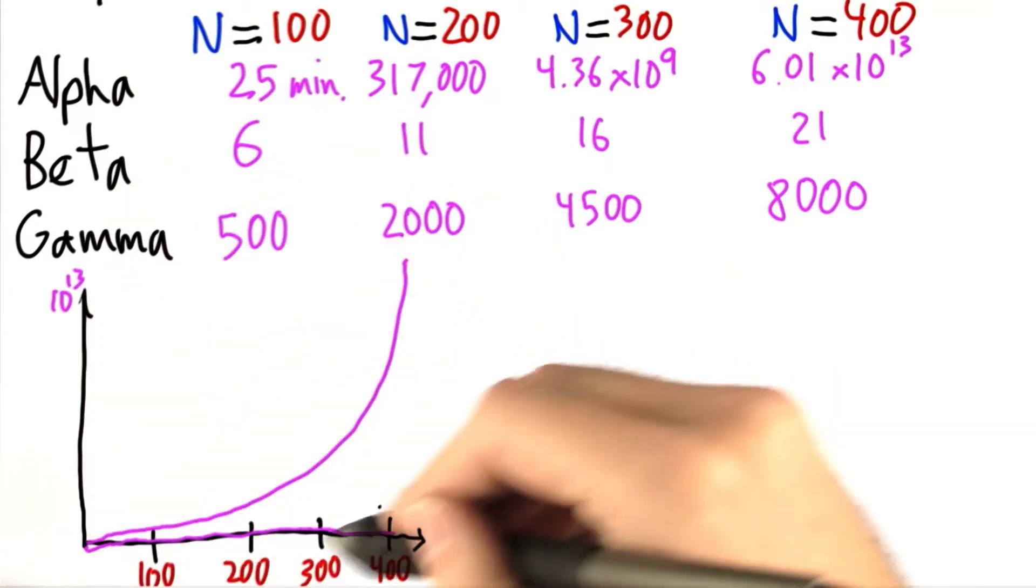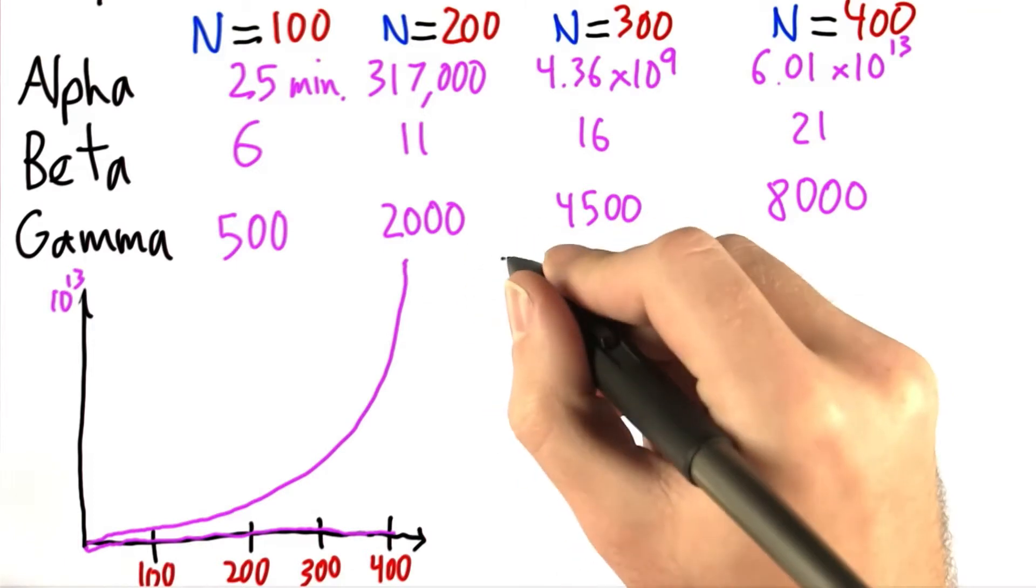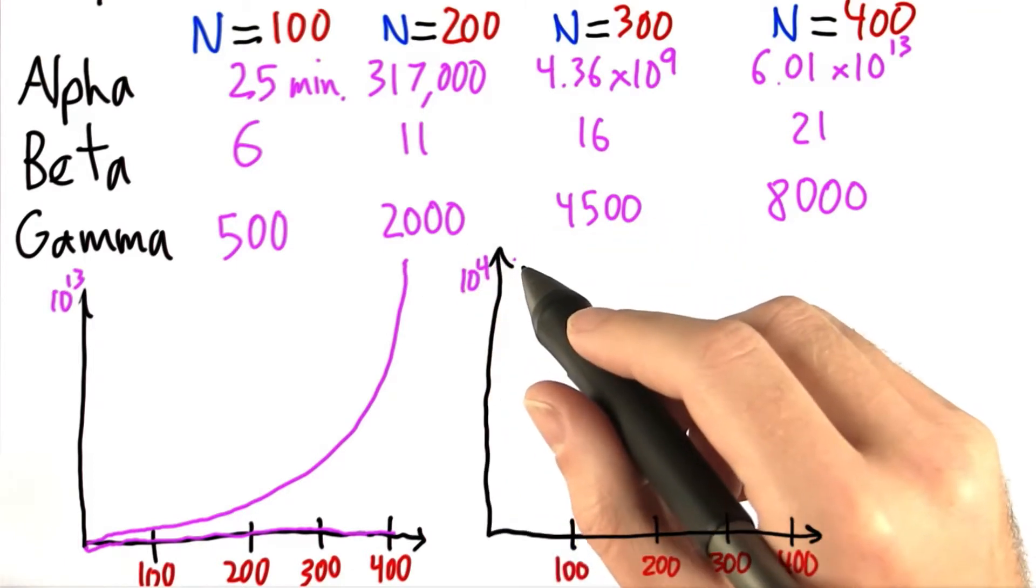So let's zoom in a bit and look at this again. All right, so now we're only going up to 10 to the 4th. So that makes gamma fairly easier to draw.